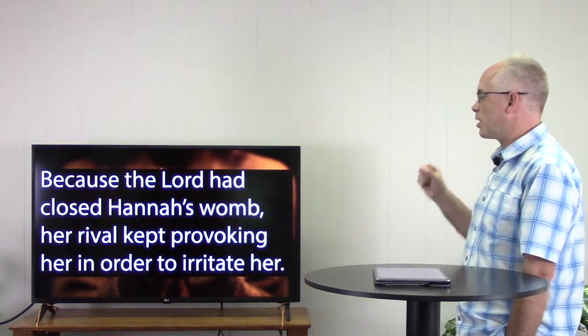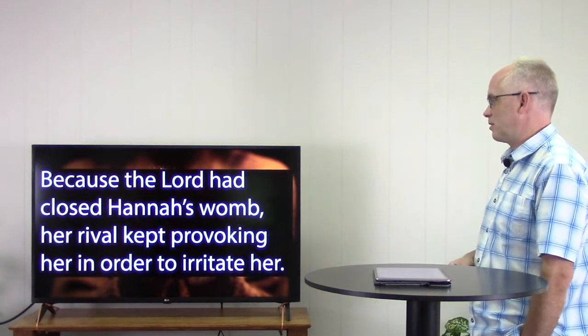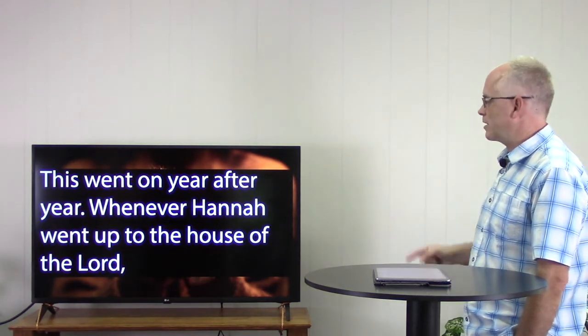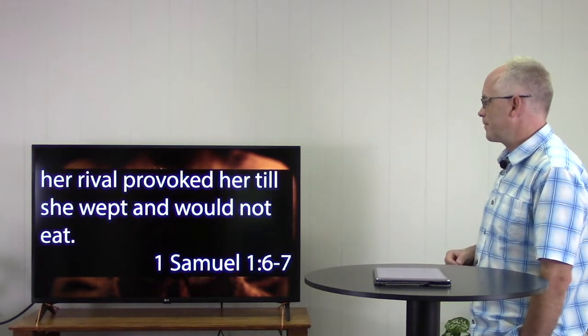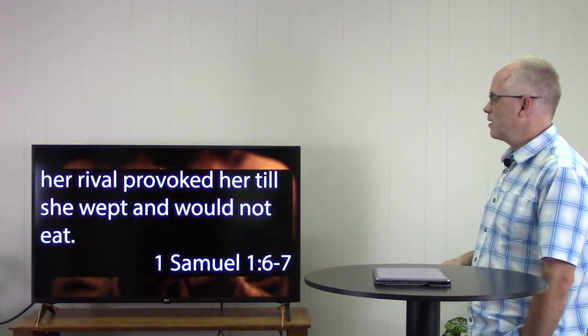And then, on top of not getting the one thing she needs, Peninnah is not what one would call a nice sister-wife. According to 1 Samuel 1, we read this: Because the Lord had closed Hannah's womb, her rival kept provoking her in order to irritate her. This went on year after year. Whenever Hannah went up to the house of the Lord, her rival provoked her till she wept and would not eat. Peninnah is the definition of a mean girl. She sees the weakness, she sees the anxiety, she sees the fear, and she just picks and picks and picks. She taunts and provokes until finally Hannah breaks down in tears. Not just once, but every year they play through the exact same script. Peninnah taunts and Hannah cries.